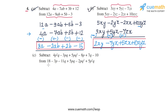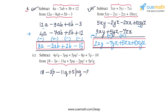Now coming to part c, we have the second expression from which we have to subtract. Let's write it first: 18 minus 3p minus 11q plus 5pq minus 2pq² plus 5p²q. Below this we will write the first expression such that the like terms are written one below the other.